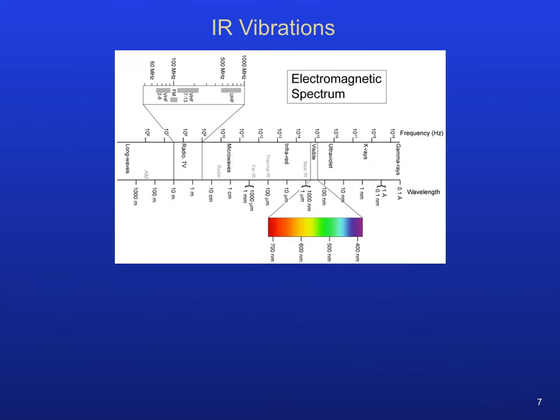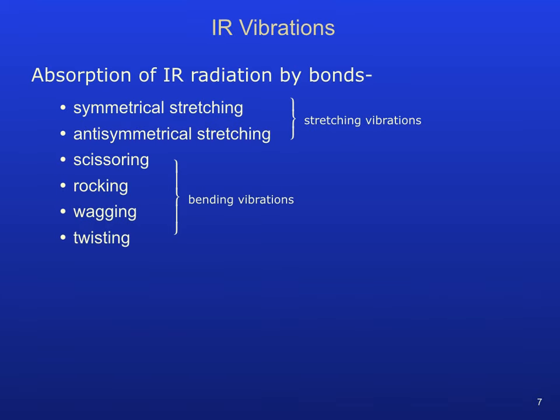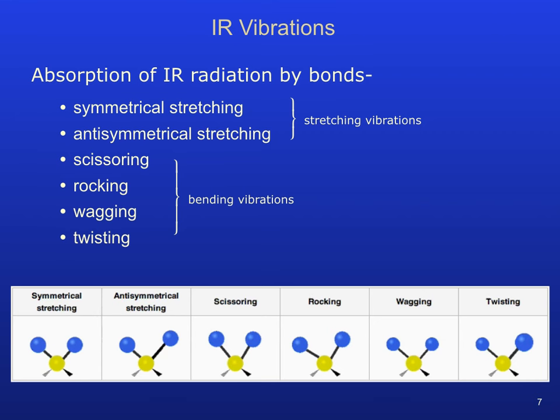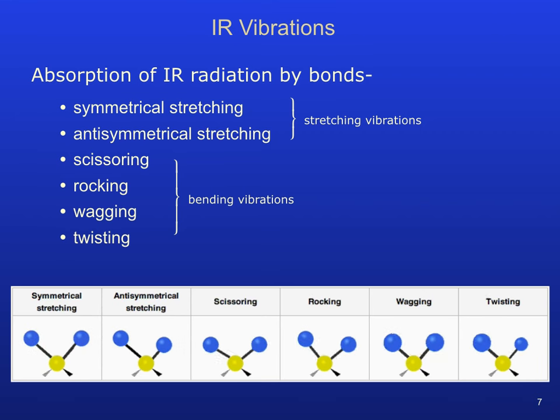The infrared portion of the electromagnetic spectrum is very useful in structure elucidation since it interacts in a non-destructive manner with a large variety of bonds present in molecules. This region is large enough to distinctly identify categories of functional groups, and these wavelengths of interaction vary slightly due to the number and type of bonded atoms adjacent to the functional groups. Motions that bonds typically undergo when absorbing IR radiation fall into the general categories of bending and stretching vibrations, and animated representations of each are shown below.